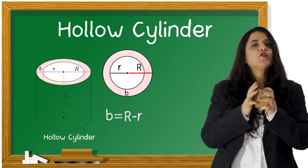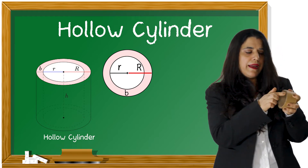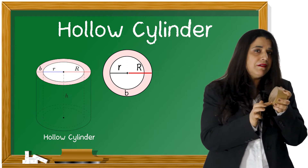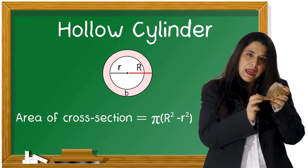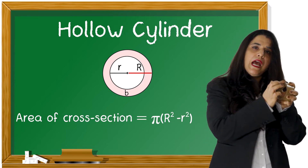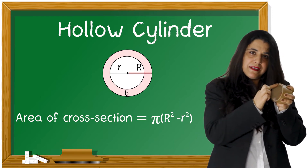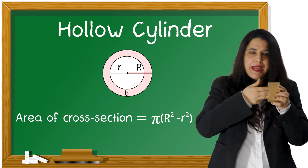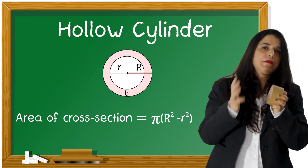Now coming to area of cross section. Cross section — you have studied in biology — when we cut something, we get the cross section of it. Now when I cut this, I get the cross section, which is a ring. Area of this ring which is a cross section is pi into the area of the outer circle minus the area of the inner circle. That gives you the area of this part. So area of cross section is pi into capital R square minus small r square.